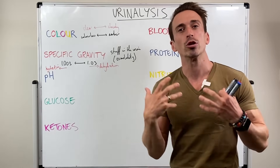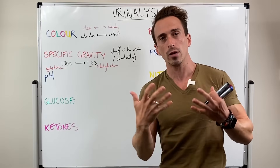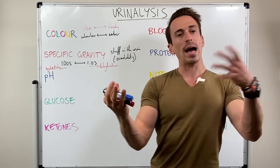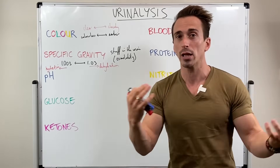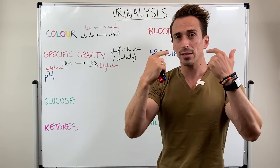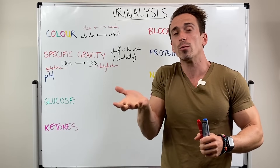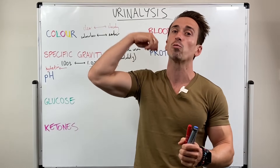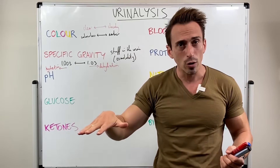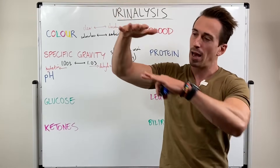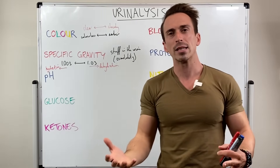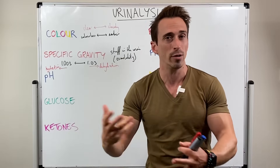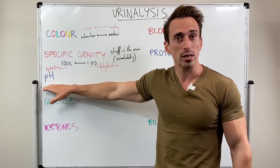pH is looking at the concentration of hydrogen ions, and it can be a great way of identifying acid-base imbalances. Someone can have a respiratory or metabolic acidosis or alkalosis — meaning too much or too little hydrogen ions. Respiratory-based means something to do with breathing: retaining too much carbon dioxide leads to acidosis, while hyperventilating and losing too much carbon dioxide leads to alkalosis. Metabolic means something is happening at the kidneys, retaining too much hydrogen ions or losing too much bicarbonate. This can show up in the pH test of the urinalysis.